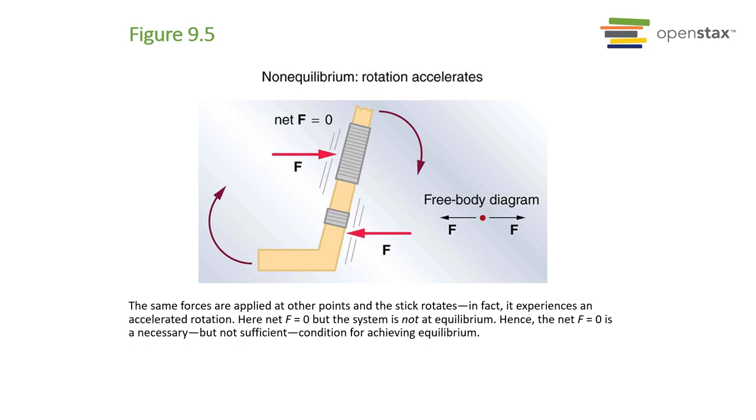This situation is not in equilibrium because just because the forces are equivalent, when we look at their behavior against a pivot point, we see the net result is a rotation. So this is not an equilibrium because our object is rotating.